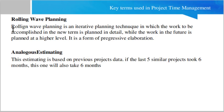Another term is Rolling Wave Planning. Rolling wave planning is an iterative planning technique in which the work to be accomplished in the near term is planned in detail, while the work in the future is planned at a higher level. It is a form of progressive elaboration.